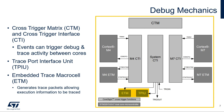The trace port interface unit and the embedded trace macro cell generate the trace packets that allow execution information to be traced. This information includes the number of instructions executed in the same cycle, changes in program flow, the current processor instruction state, exception information, addresses of memory locations accessed, and more. The TPIU, or the trace port interface unit, formats the trace stream and outputs it onto the external trace port signals.